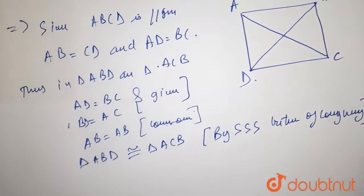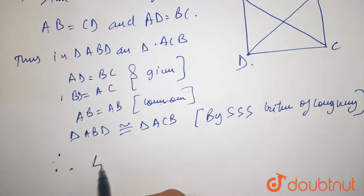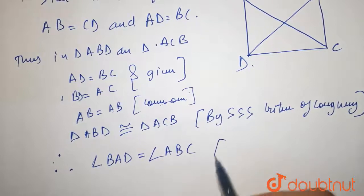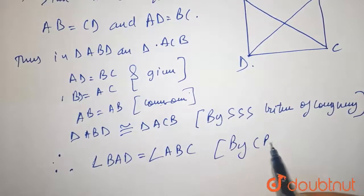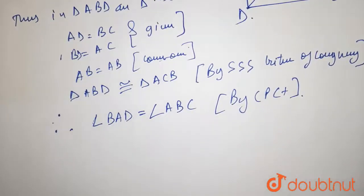Therefore, angle BAD is also equal to angle ABC by CPCT.